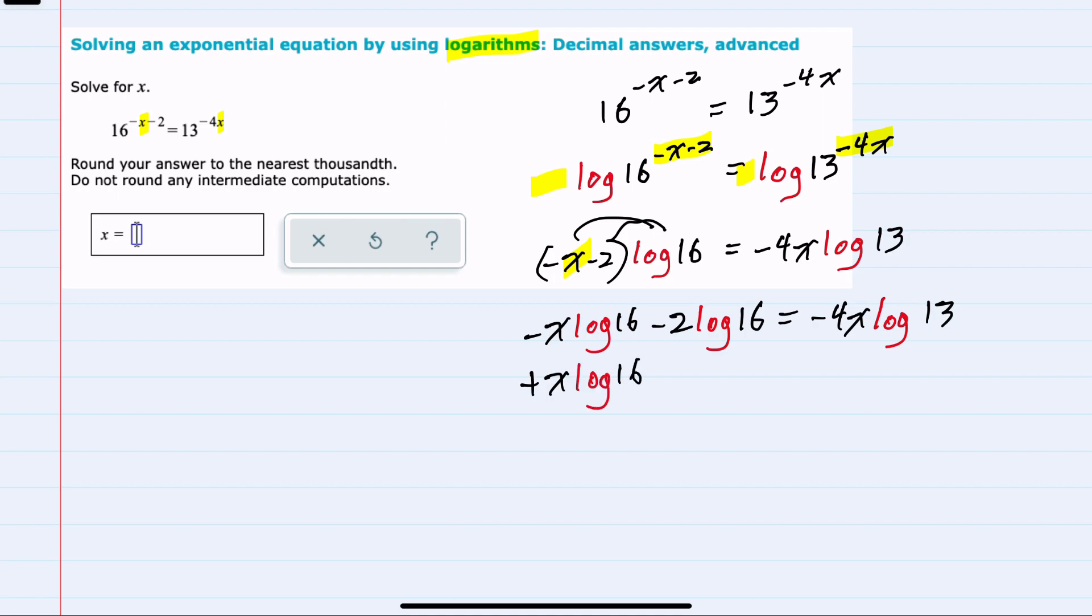x log 16, to the right-hand side. This cancels on the left, leaving me with negative 2 log 16 on the left, and on the right, I can't combine those two logs,